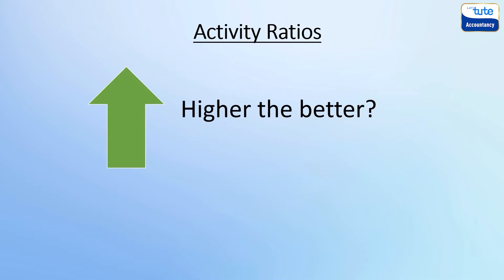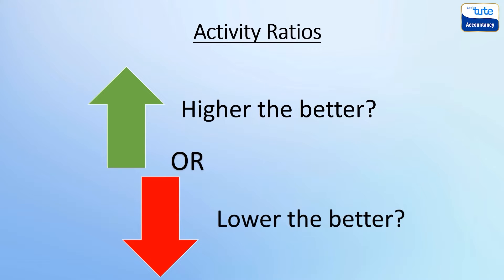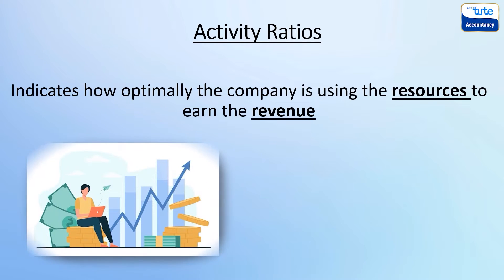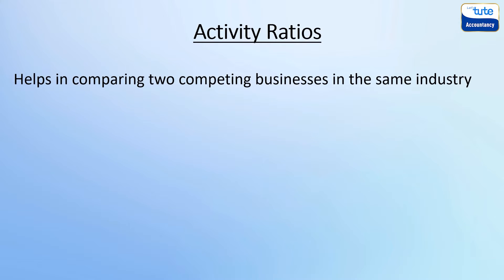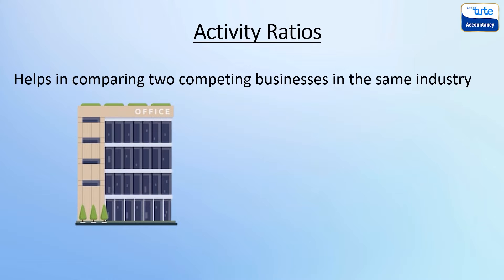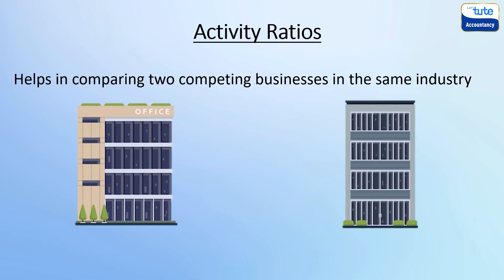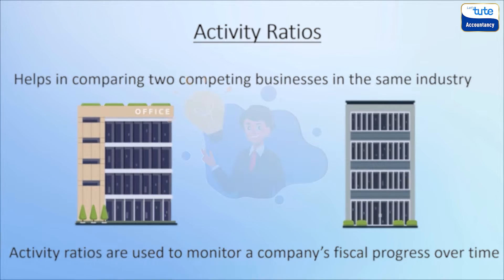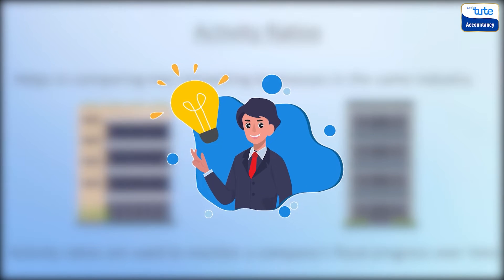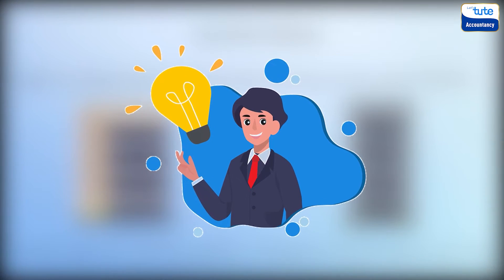Now, can you tell us whether the higher ratio would be better or the lower activity ratio is better? Since these ratios indicate how optimally the company is using its resources to earn the revenue, a higher ratio would be considered better. Activity ratios are useful to compare competing businesses within the same industry to determine how a particular company is performing compared to others, or they may be used to monitor a company's fiscal progress over a period of time.